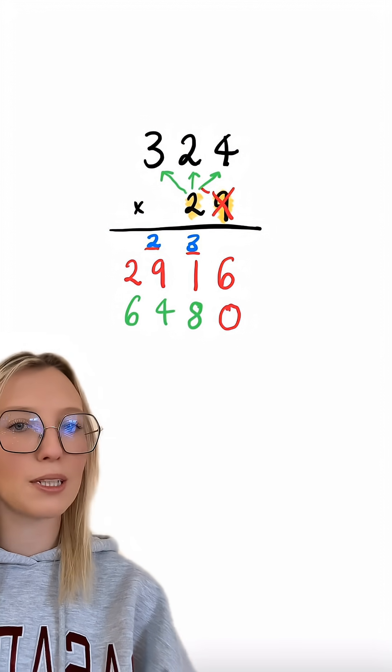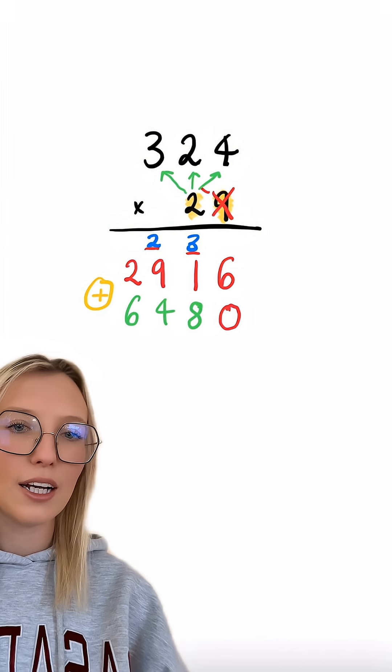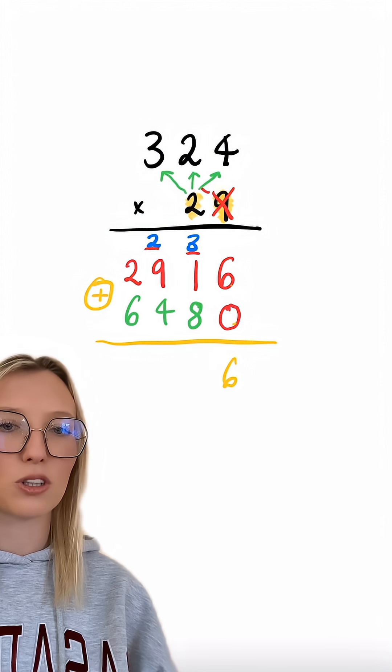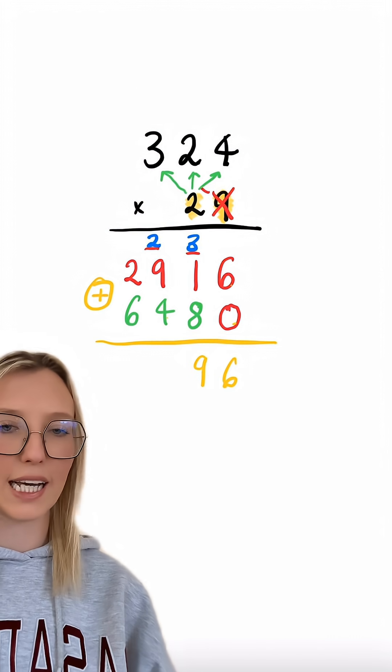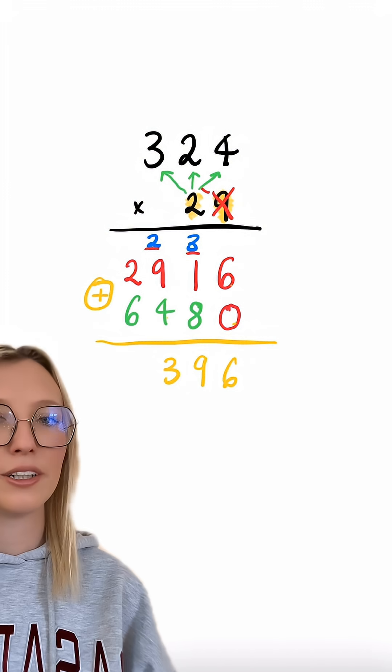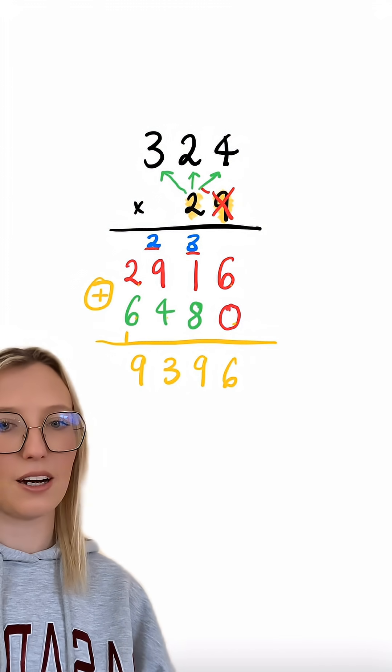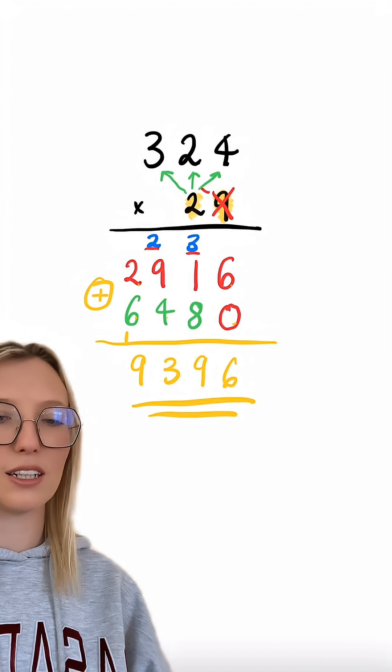Once we've got to this stage the final step is to just add these numbers together. So we're going to be left with 6 plus 0 which is 6, 1 plus 8 which is 9, 9 plus 4 which is 13 so we're going to carry that 1, 2 plus 6 which is 8, add the 1 we've carried gives us 9. So the answer is 9,396.